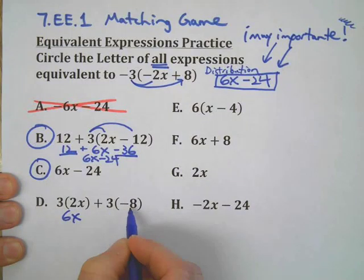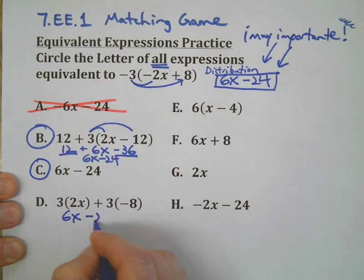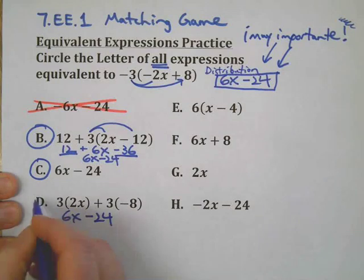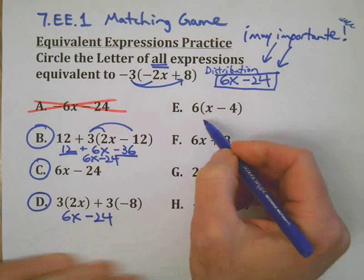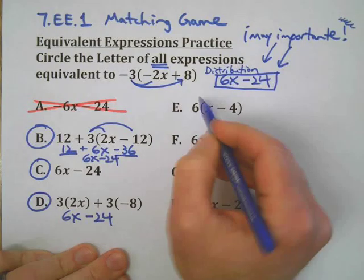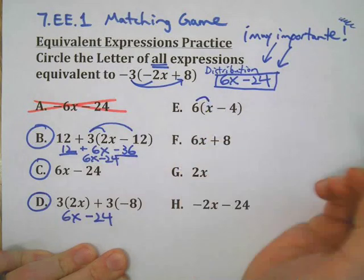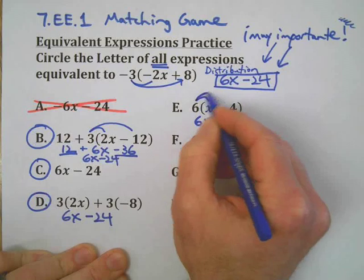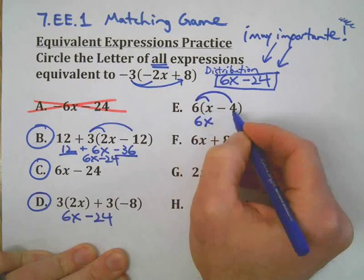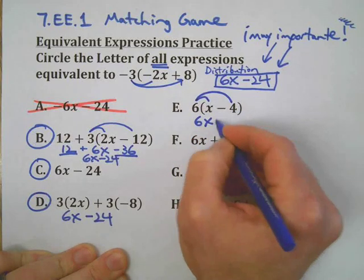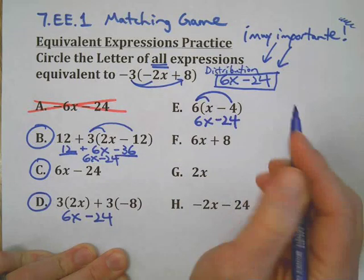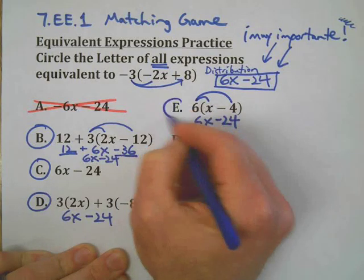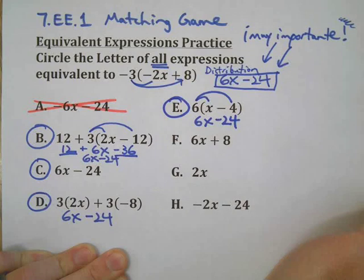On choice D: 3 times 2x is 6x, and 3 times negative 8 is negative 24 — so that's a match. Choice E is distributing 6 to the x and to negative 4: 6 times 4 is 24, but there's the negative sign — so 6x minus 24. That's also a match. Are all of these going to match? Well, no — of course not.